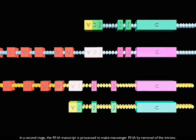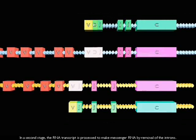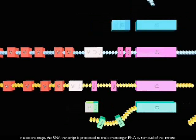In a second stage, the RNA transcript is processed to make messenger RNA by removal of the introns.